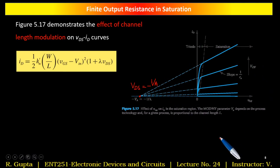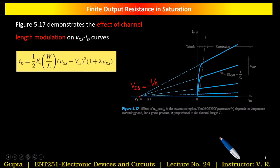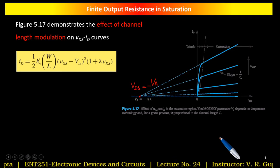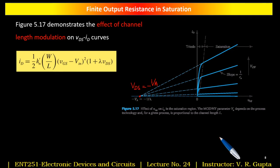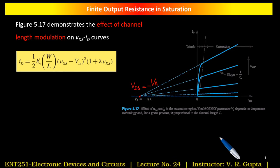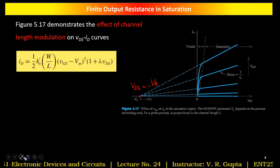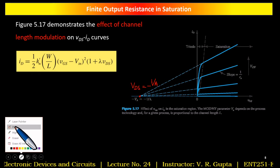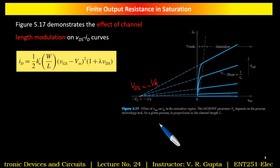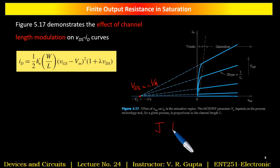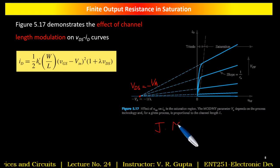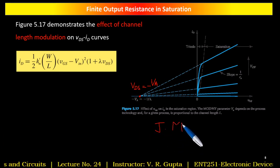This VA is called the Early voltage — a similar concept exists in bipolar junction transistors. That concept was given by the scientist J.M. Early, and based on his name we call this voltage the Early voltage.